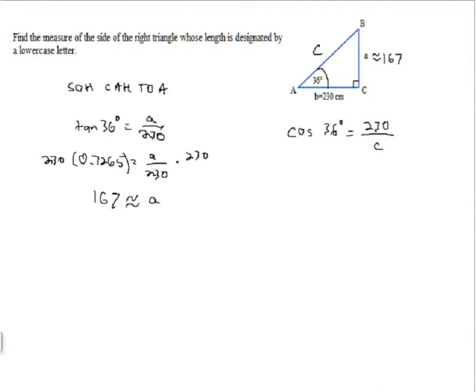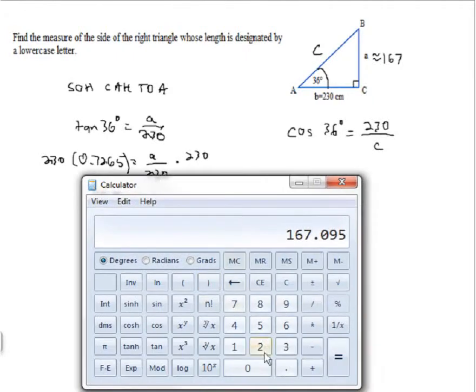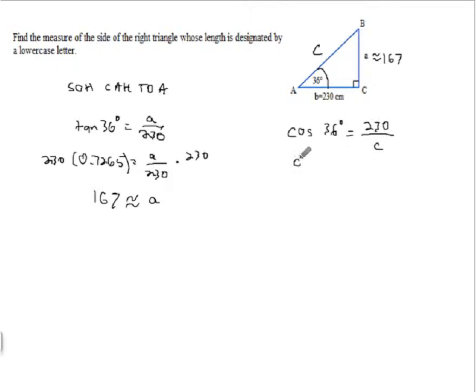Again, I've got to go to my calculator and figure out what the cosine of 36 is. So, 36 degrees, cosine 0.8090, I'll round that to four decimal places, 0.809 because the zero is dropped. So, 0.809 is equal to 230 over C.